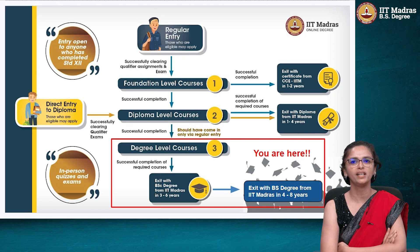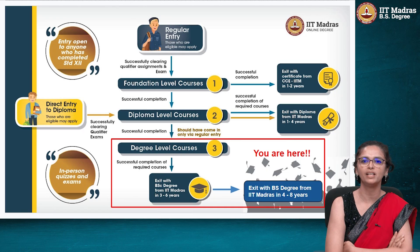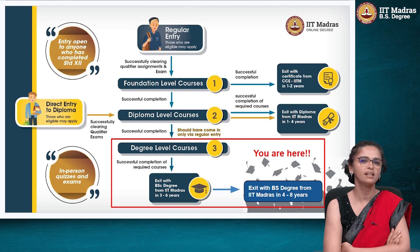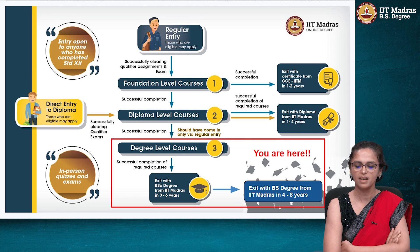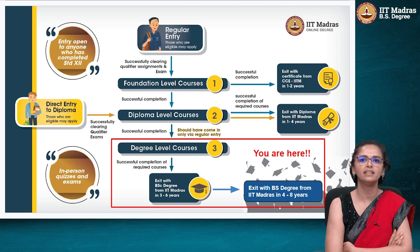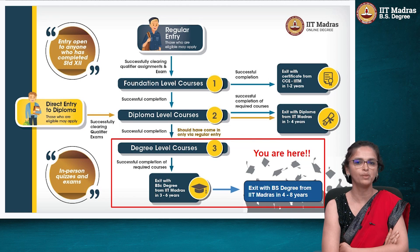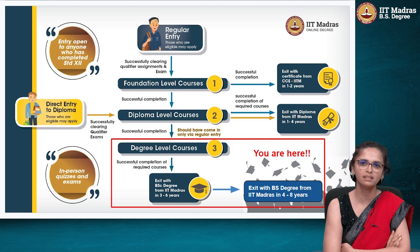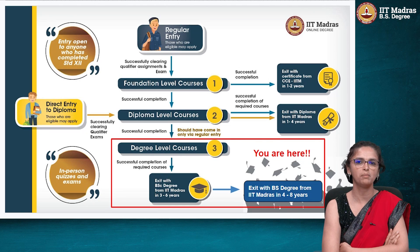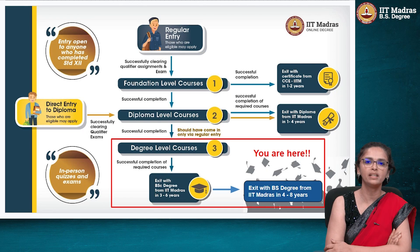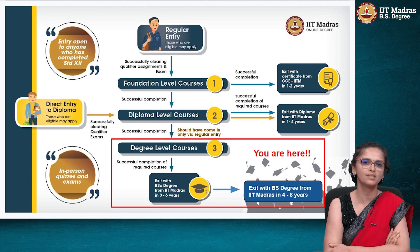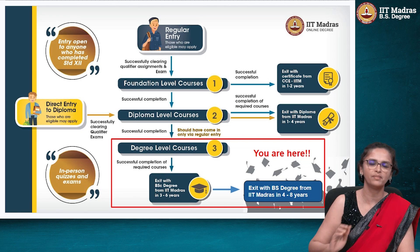Hello all, welcome to this orientation as you enter the degree level — either the BSc level or the BS level. This is a diagram that all of you will be familiar with, that you would have been seeing right from qualifier to foundation to diploma. You have crossed the foundation, crossed the diploma, and now you are in the degree level. You are very close to the finishing line; we hope you are doing really well and have enjoyed the courses thus far.